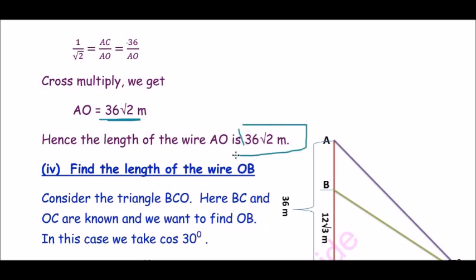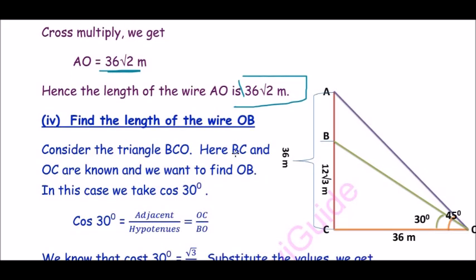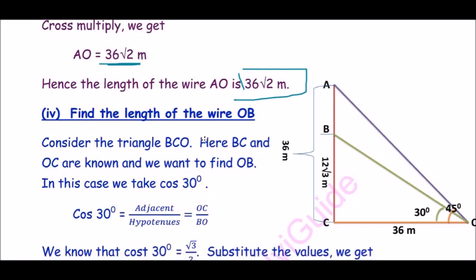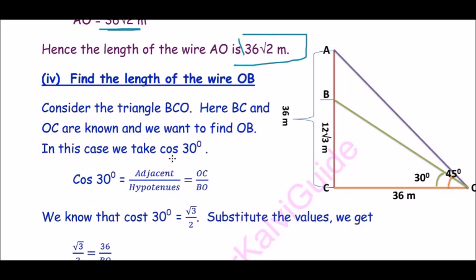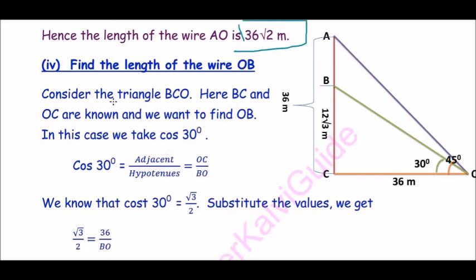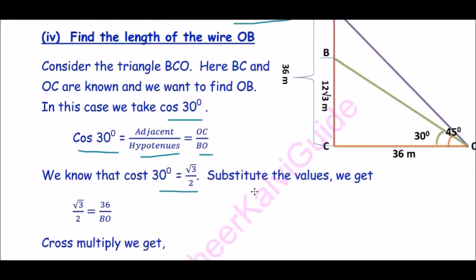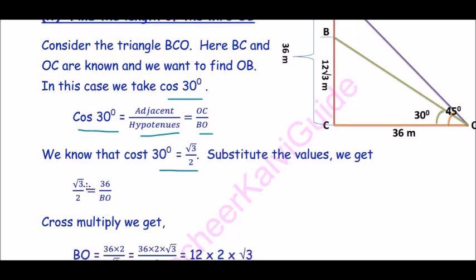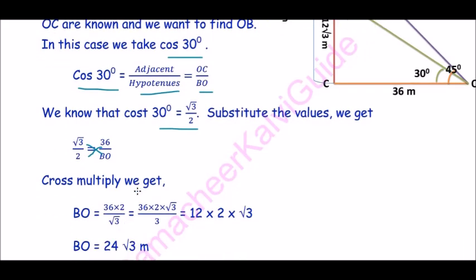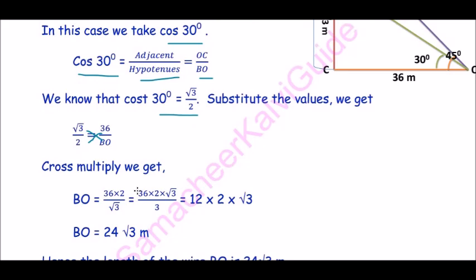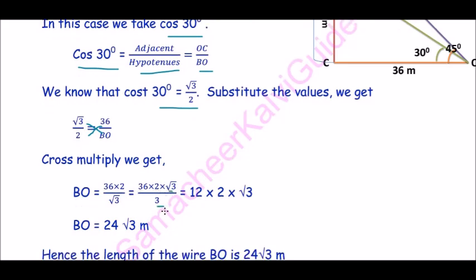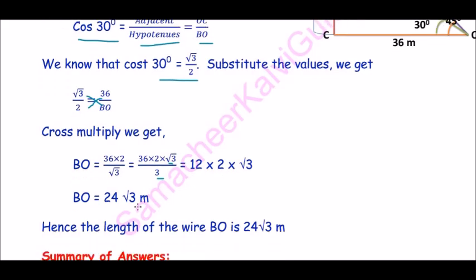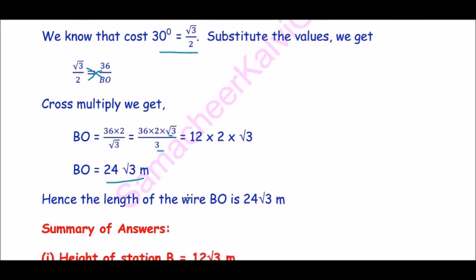And the last part of the question: find the length of the wire OB. Consider the triangle BCO. Here BC and OC are known, and we want to find OB. In this case, we take cos 30 because the opposite side BC is 12 root 3 which is very difficult for calculations, so we take the adjacent side OC. Cos 30 equals adjacent by hypotenuse, that is OC by BO. We know that cos 30 equals root 3 by 2. Substitute these values: root 3 by 2 equals 36 by BO. Cross multiply, we get BO equals 36 into 2 divided by root 3. Multiply root 3 in numerator and denominator, we get 36 into 2 into root 3 by 3, that is 12 into 2 into root 3. That is BO equals 24 root 3. Hence, the length of the wire BO is 24 root 3.